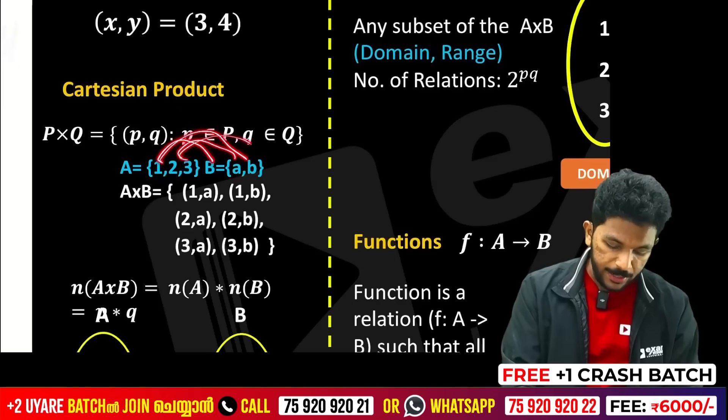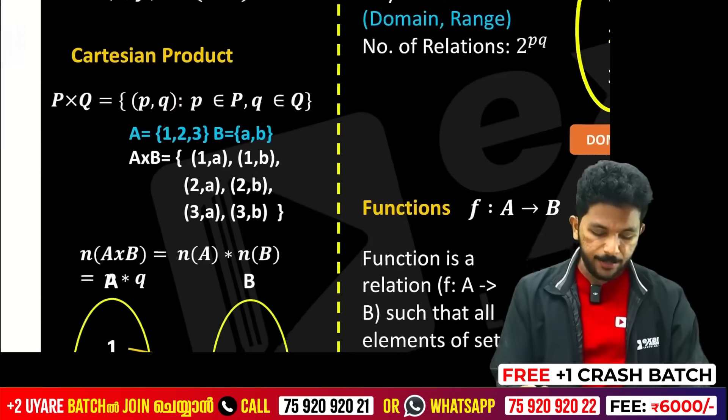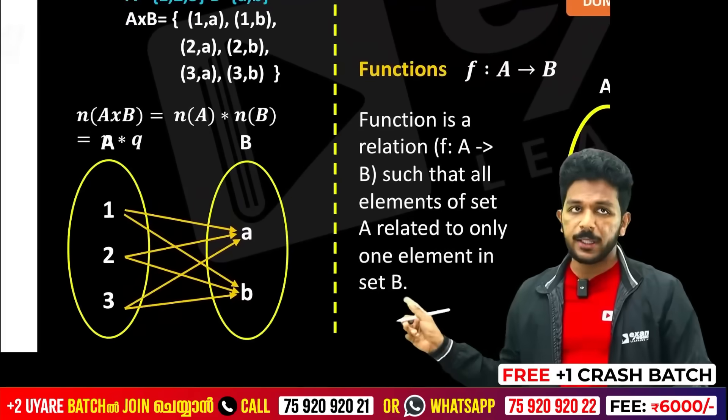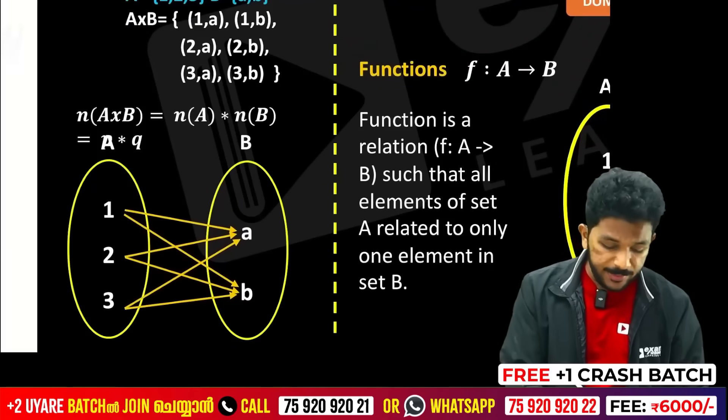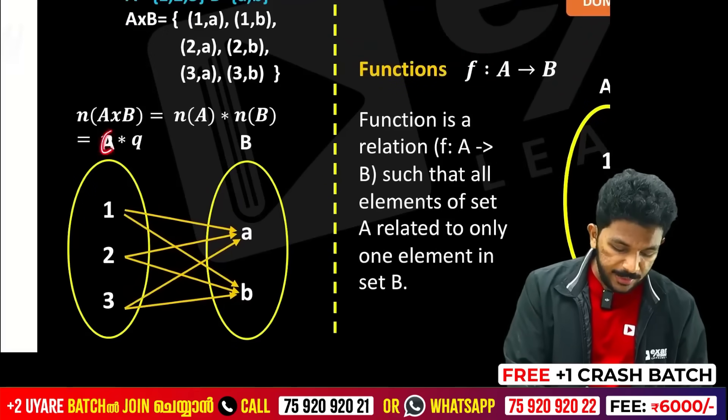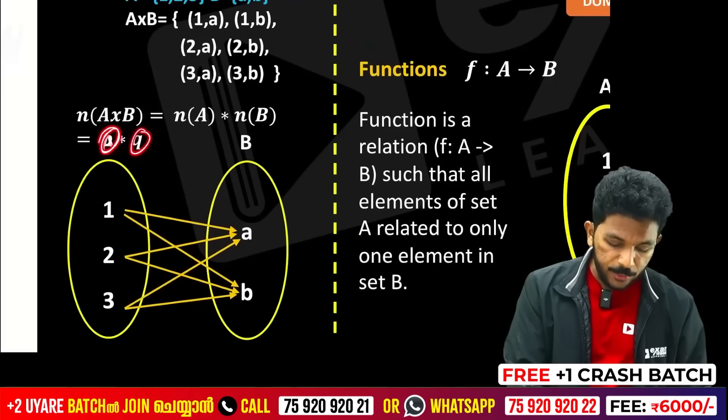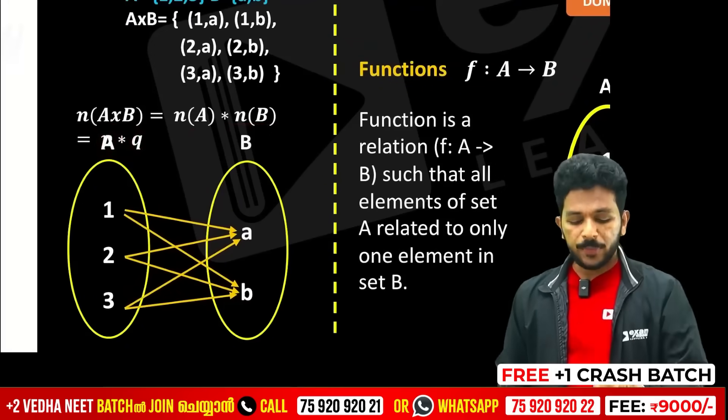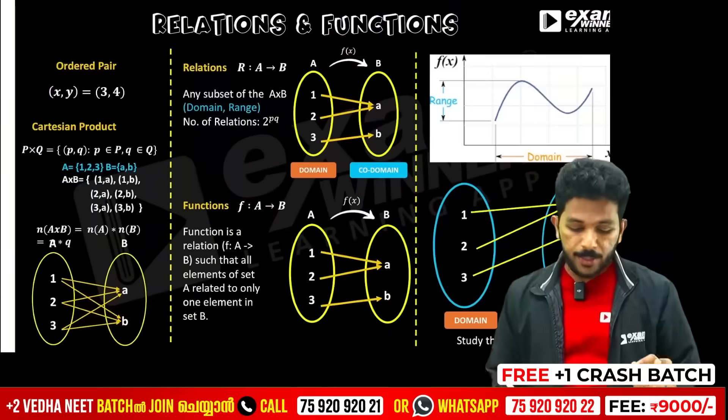The ordered pairs of the Cartesian product are: (1,A), (1,B), (2,A), (2,B), (3,A), (3,B). How many elements are there? First set P into Q — number of elements of A multiplied by number of elements of B gives total elements.